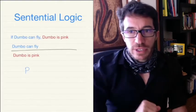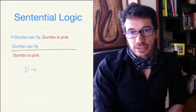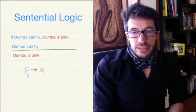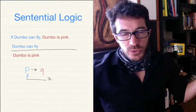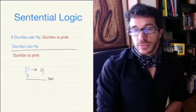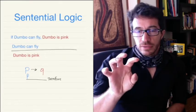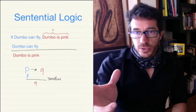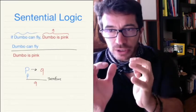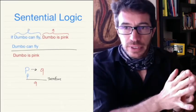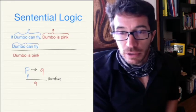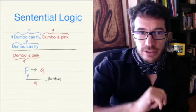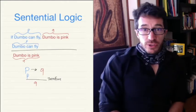This particular reasoning we're going to write as follows: P implies Q. If you know this, and if you know P, then from those two things we can deduce Q. Here, Dumbo is pink is Q, and Dumbo can fly is P. We're going to concentrate on that particular form for the reasoning.